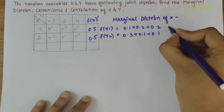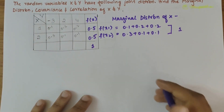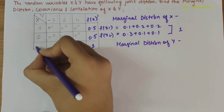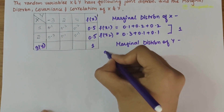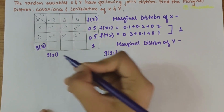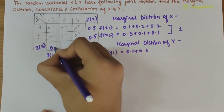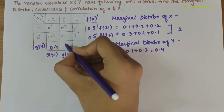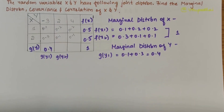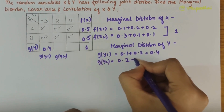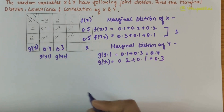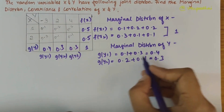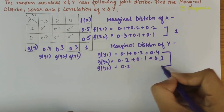If we add f of x1 and f of x2 we get the value as 1. Now the marginal distribution of y: g of y1 is the sum of 0.1 plus 0.3, that is 0.4. Similarly, g of y2 is 0.2 plus 0.1, that is 0.3, and g of y3 is 0.2 plus 0.1, that is 0.3. When we add g of y1, g of y2, and g of y3, we get 1.